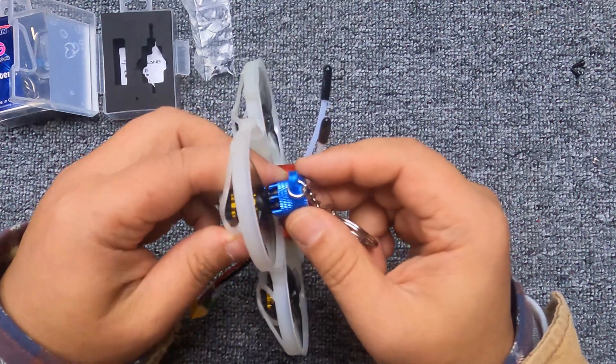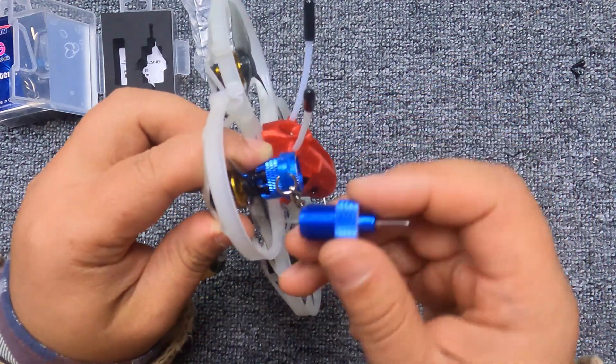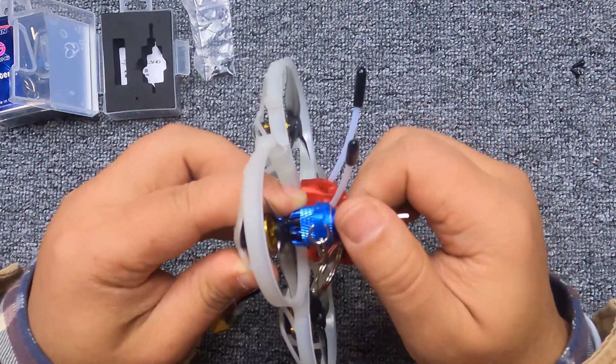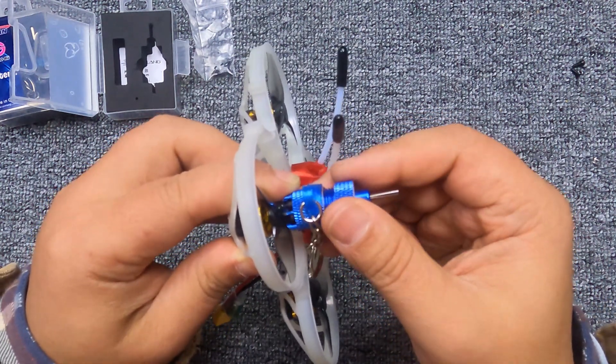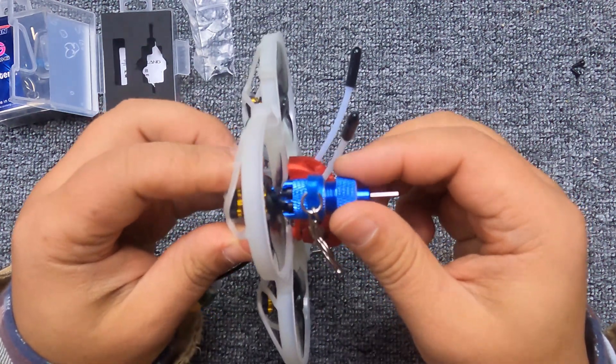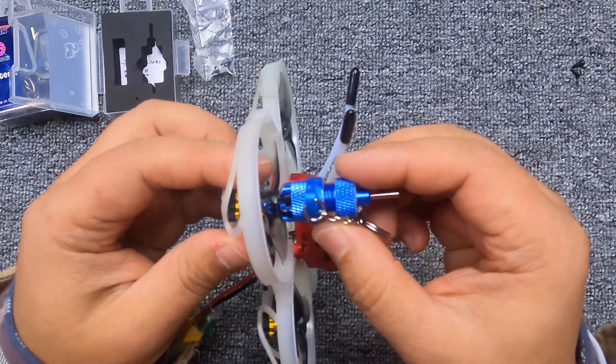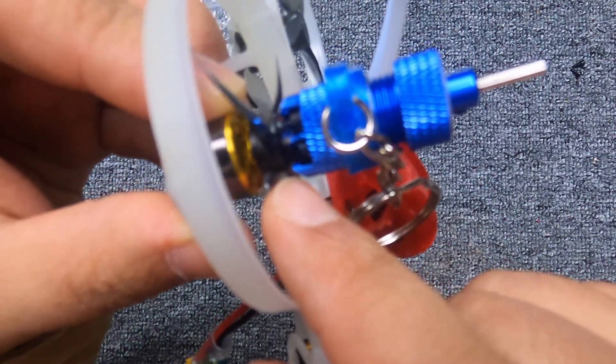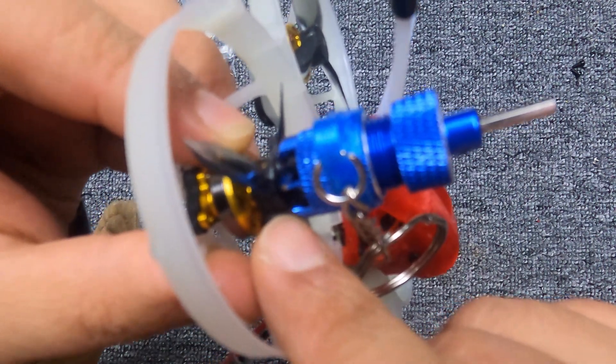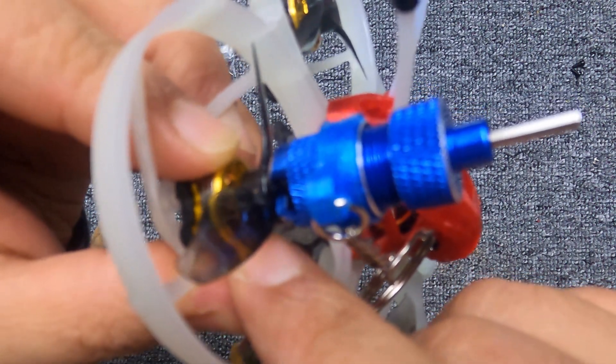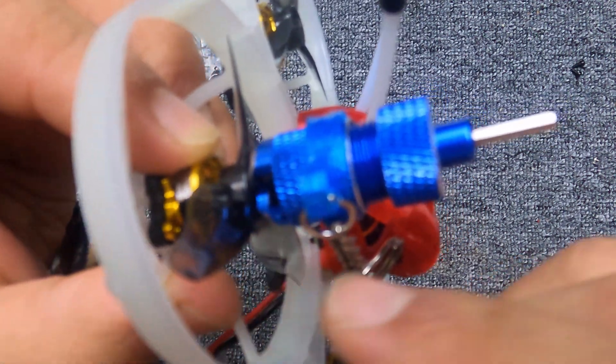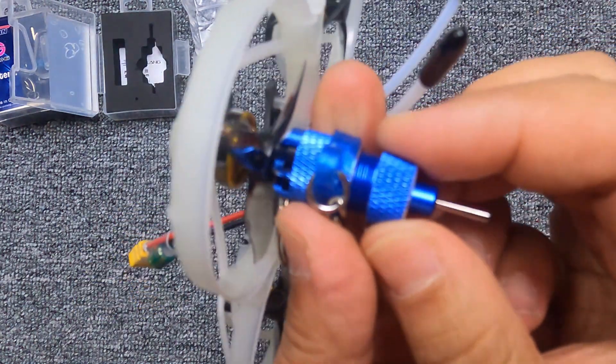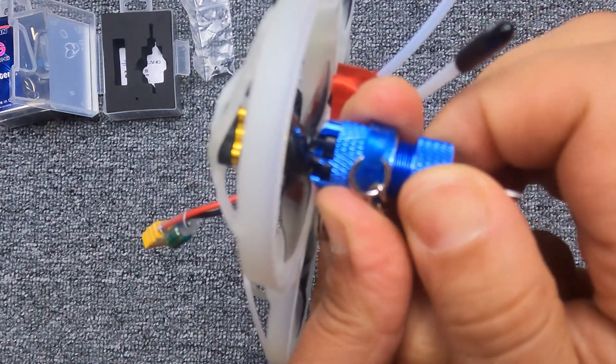And then the second step is to use this tool and screw in, just like this. When you feel it's getting tight and the propeller is moving together with this tool, you have to watch carefully from the gap. You can see the pin is pointing to the middle of the motor shaft, already pointed at it.